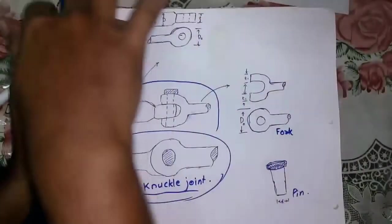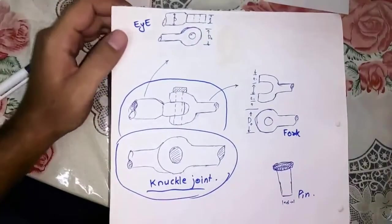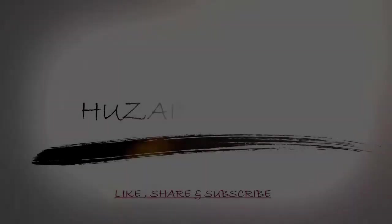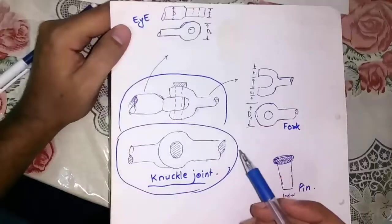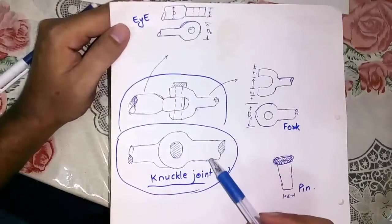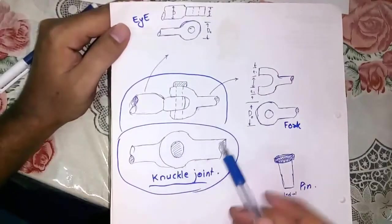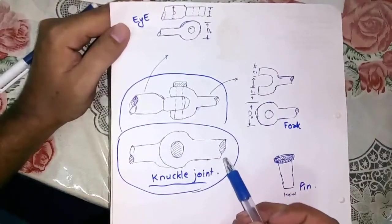Assalamu alaikum, this is Zafir Saleh. Welcome to my channel. Today we will learn about knuckle joint. Basically, knuckle joint has three parts. These two views are for the assembly of knuckle joint. This is front view.